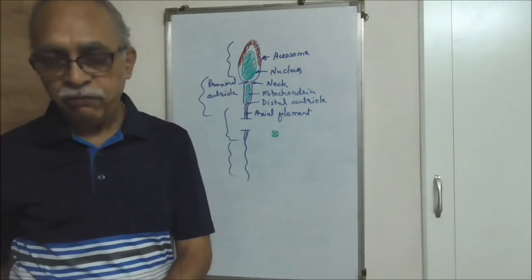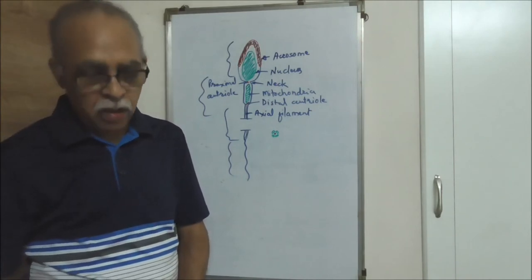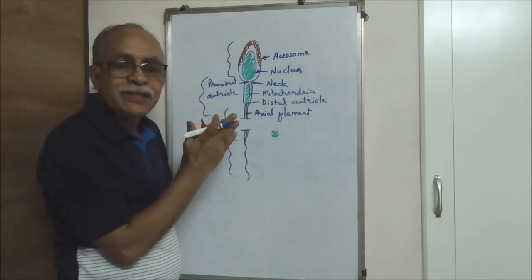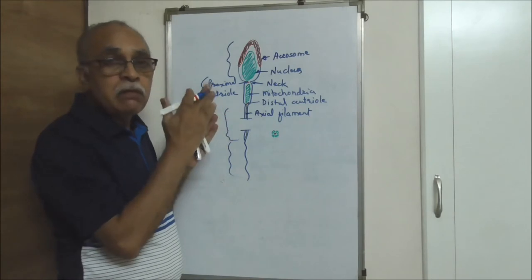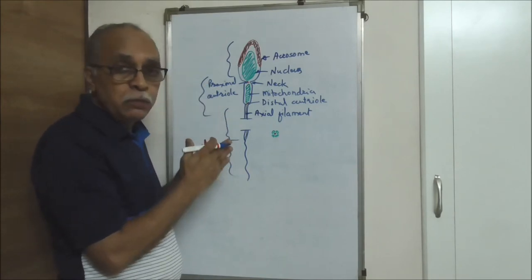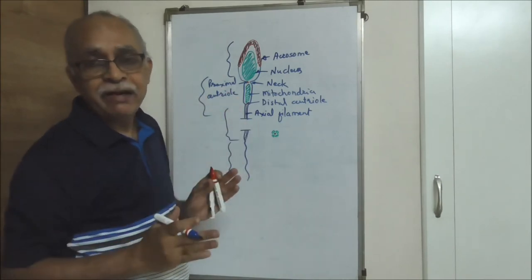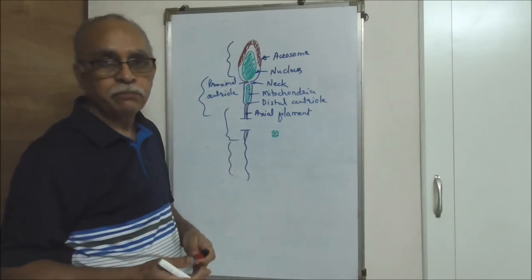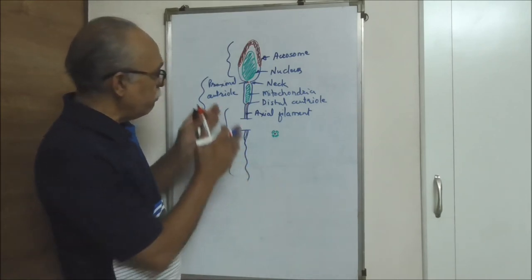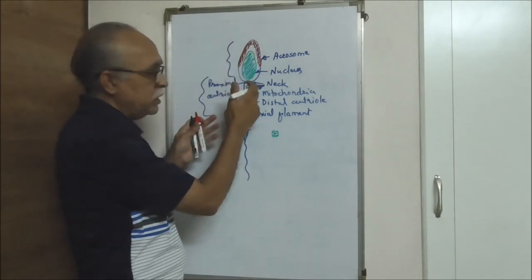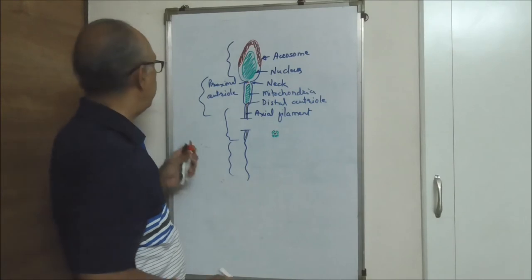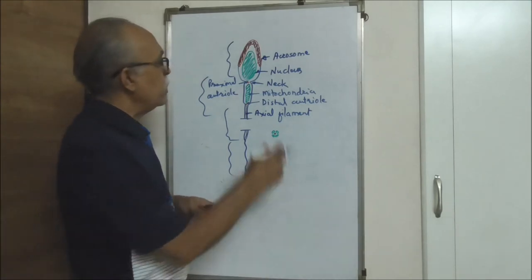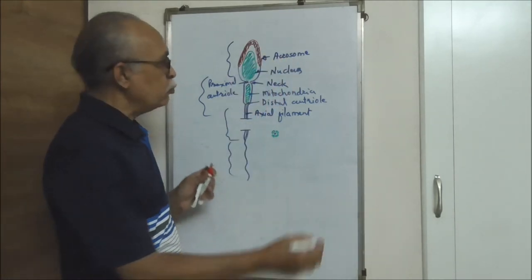Every part has a specific role to play in the process of fertilization — the actual fusion of two gametes. The main purpose of formation of this entire sperm is to let the male genes and male chromosomes be carried to the place of fertilization, to be released into the female gamete so it transforms into a zygote. So the main purpose is to carry this haploid nucleus.